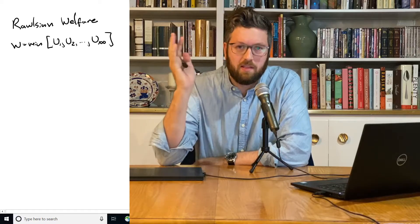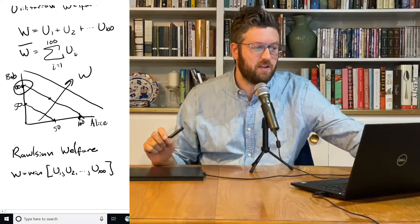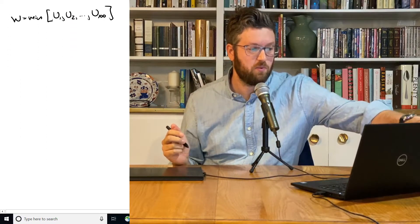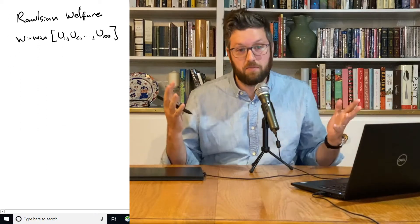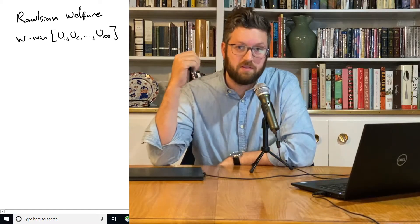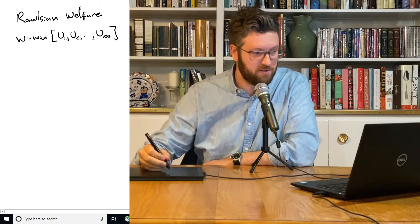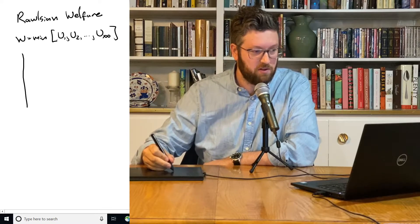So in the last one, utility was kind of like perfect substitutes. People's utility are perfect substitutes. In this one, this is the formula for perfect complements. We don't improve welfare at all unless everybody is better off. And so what does the indifference curve look like here?